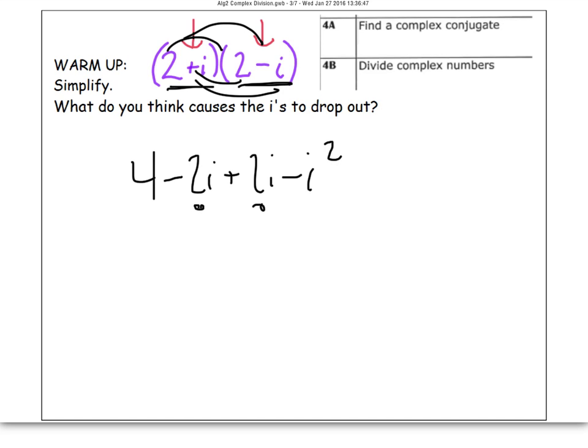Negative 2i plus 2i fall out. The 4 stays. This minus i squared, well, i squared becomes negative 1, so you have minus negative 1. That's the same as 4 plus 1, or 5.